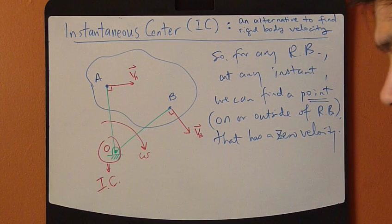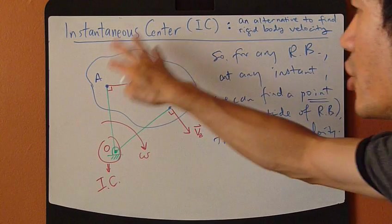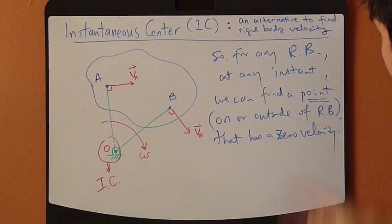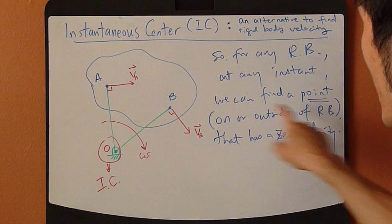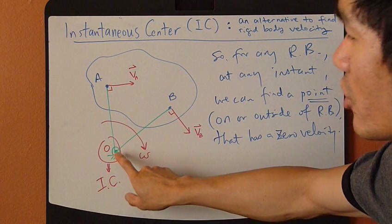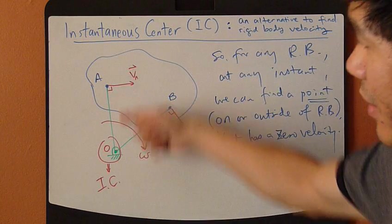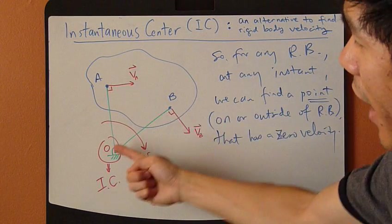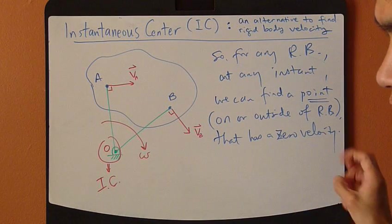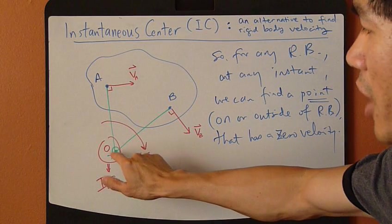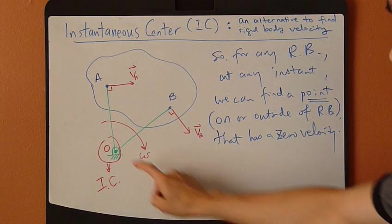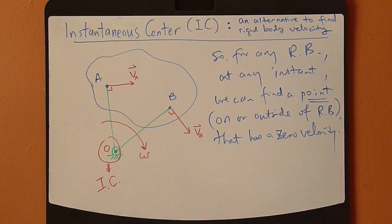And this point is somehow attached to the rigid body. If this point is on the rigid body, of course it's naturally attached on it. If this point is outside of the rigid body, like here, then this OA and OB would be the two imaginary strings that attach point O to the rigid body. So this point has zero velocity.